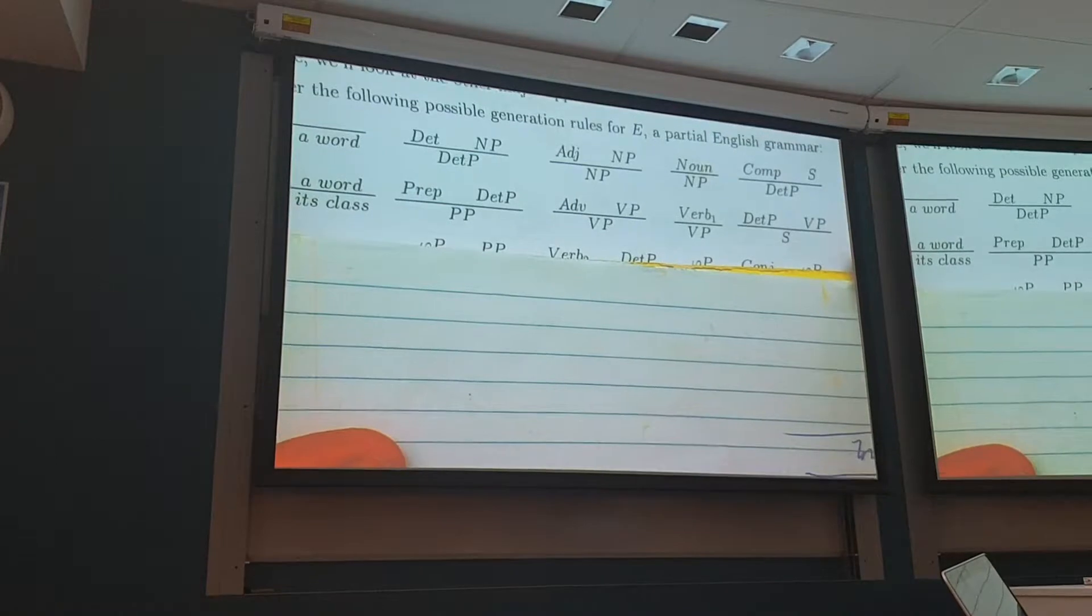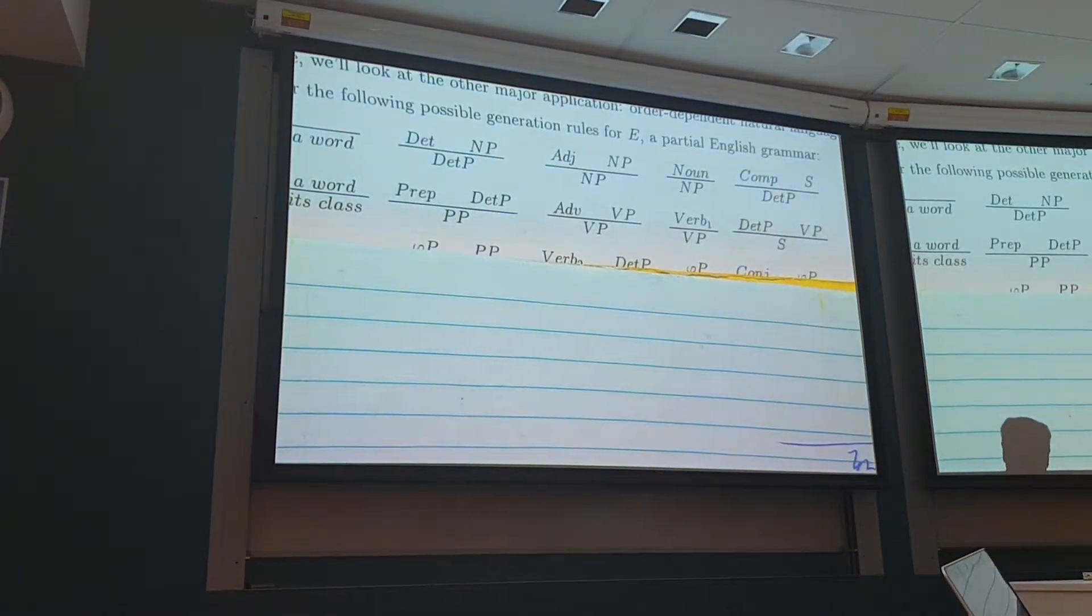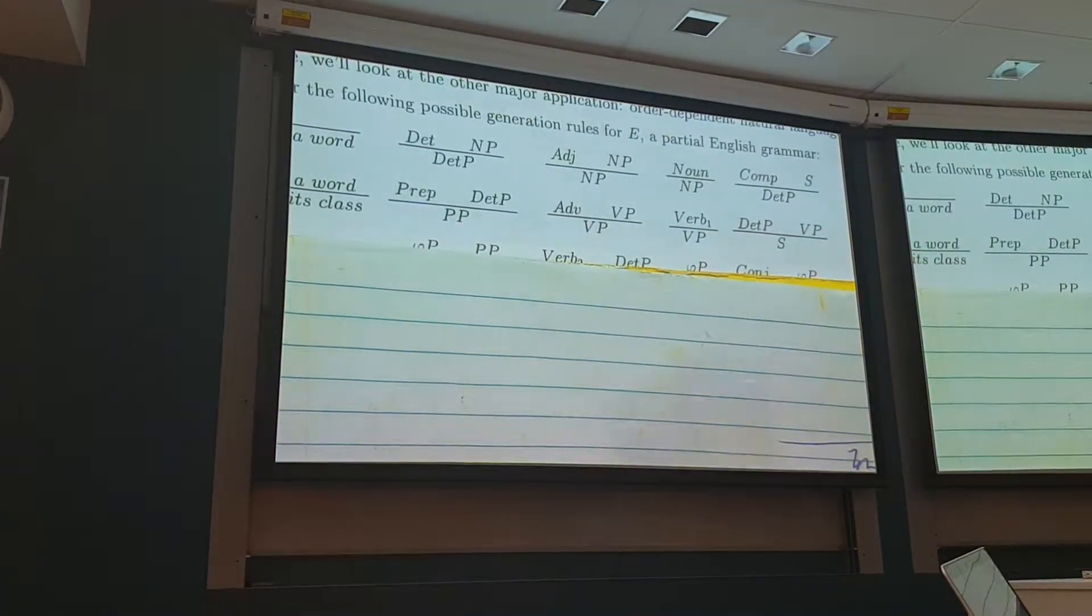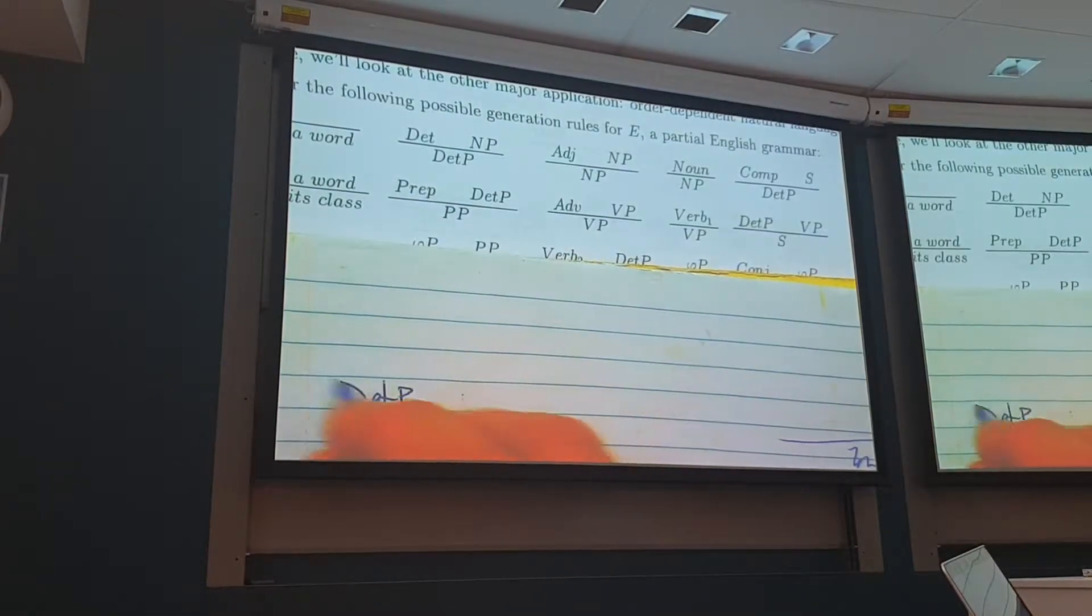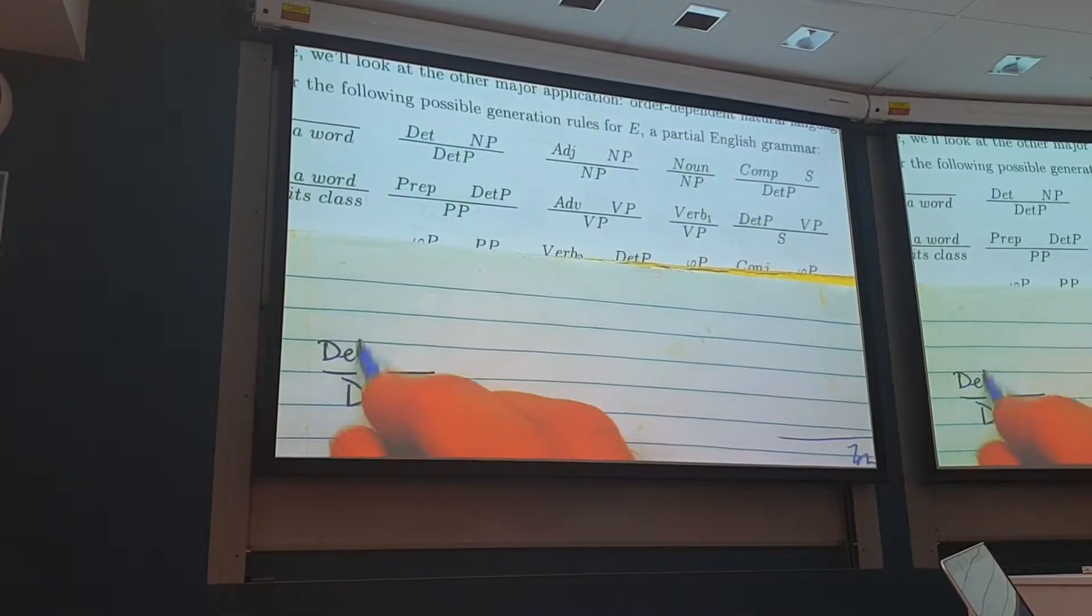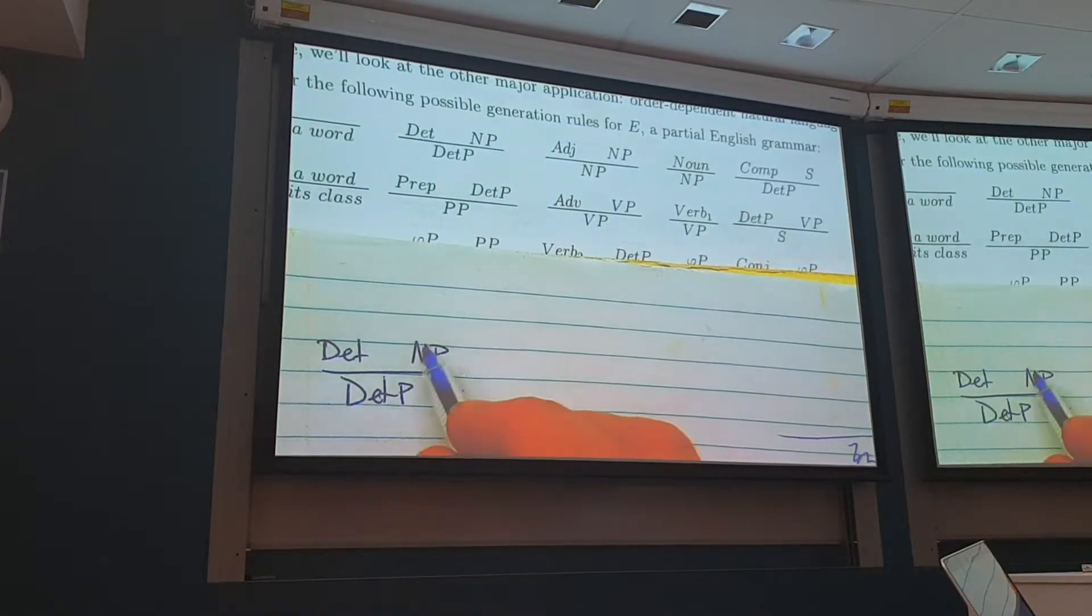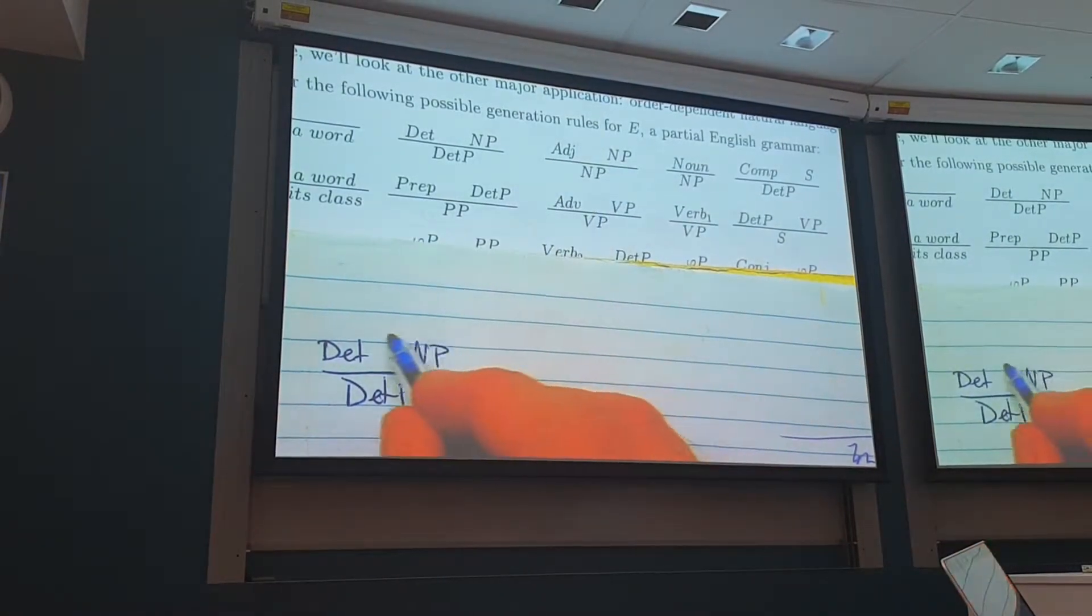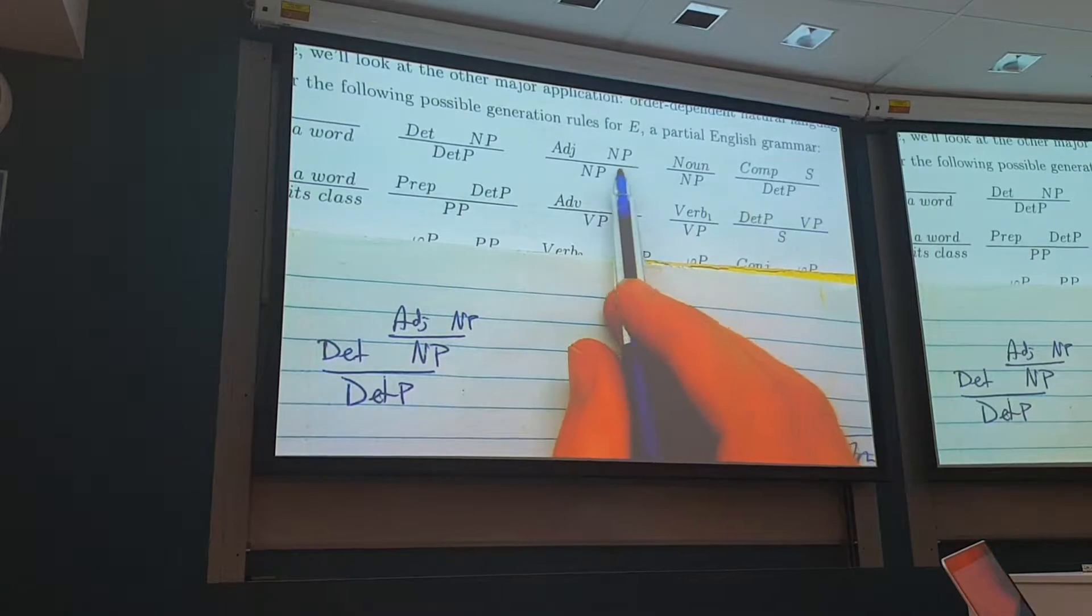So, we'll work through this, and we'll start to see it make sense, and we'll do more and more complicated examples. A determiner phrase can be made out of a determiner and a noun phrase. A noun phrase can be made out of an adjective and a noun phrase.